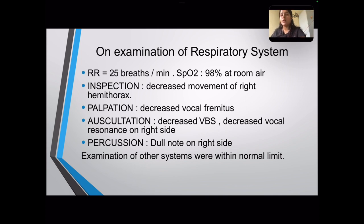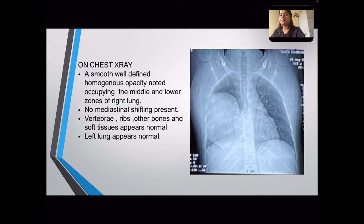Examination of other systems were within normal limits. A chest X-ray was performed which showed a smooth, well-defined, homogeneous opacity noted occupying the middle and lower zones of the right lung. There was no mediastinal shifting present. The left lung appeared normal, and vertebral ribs and other bones and soft tissues appeared normal.